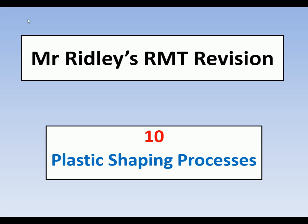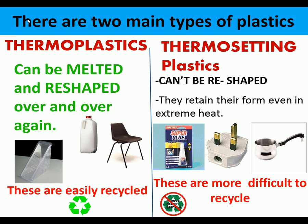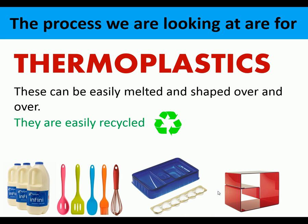Welcome to Mr. Ridley's RMT revision, number 10, looking at plastic shaping processes. Before we start, we need to look at the two main types of plastics. Thermoplastics can be melted and reshaped over and over again and are easily recycled. Thermosetting plastics cannot be reshaped and retain their form even in extreme heat, making them much more difficult to recycle. The processes in this clip all involve thermoplastics.